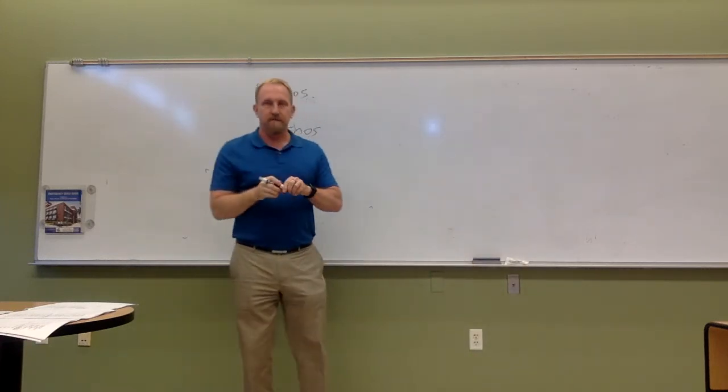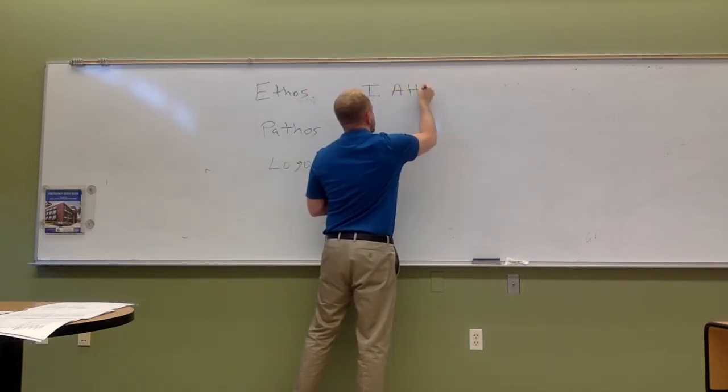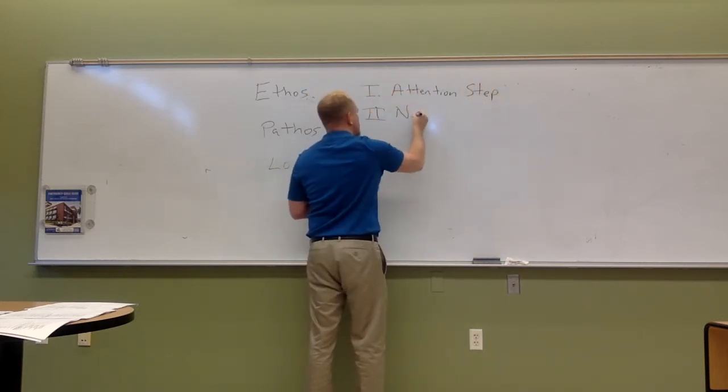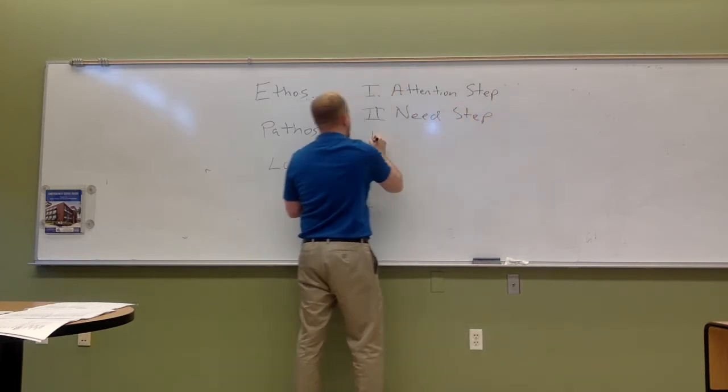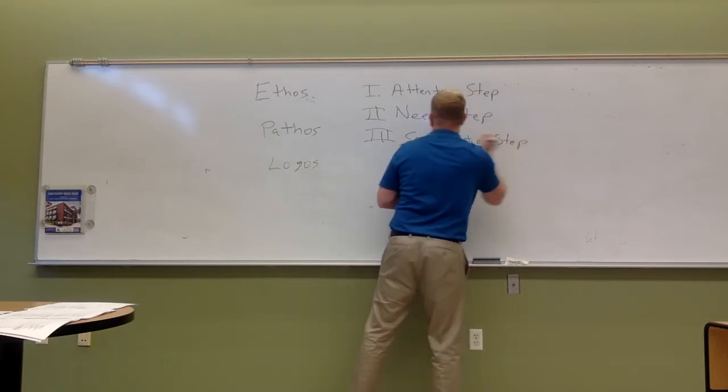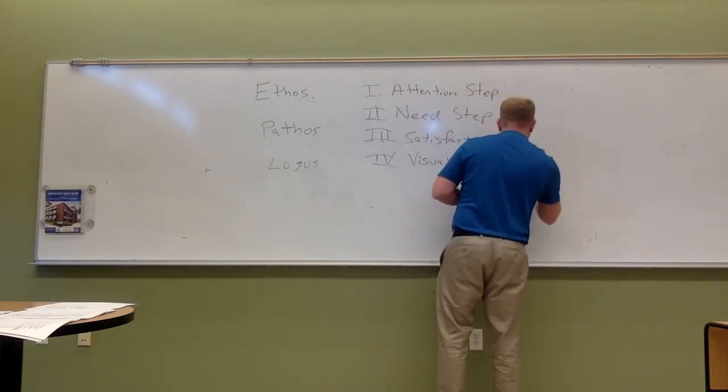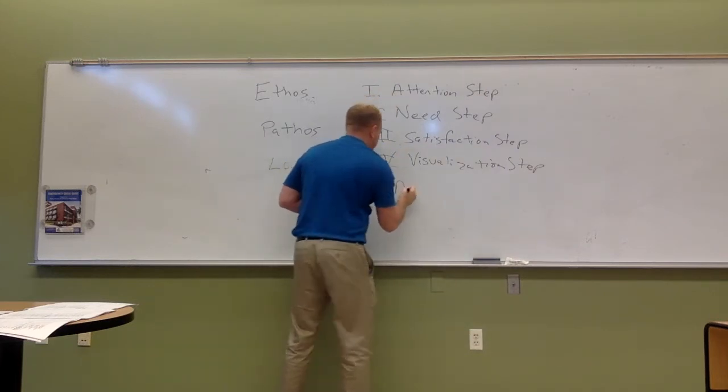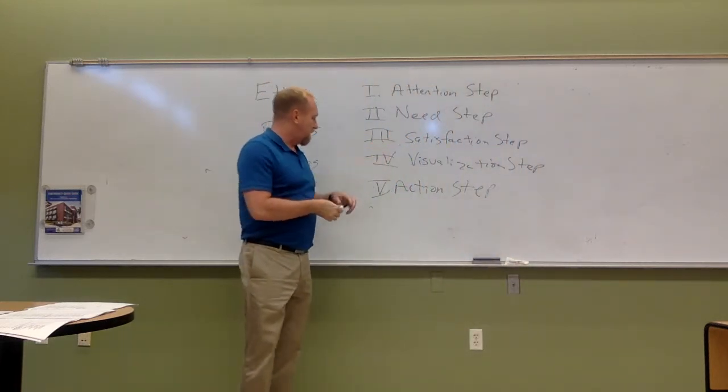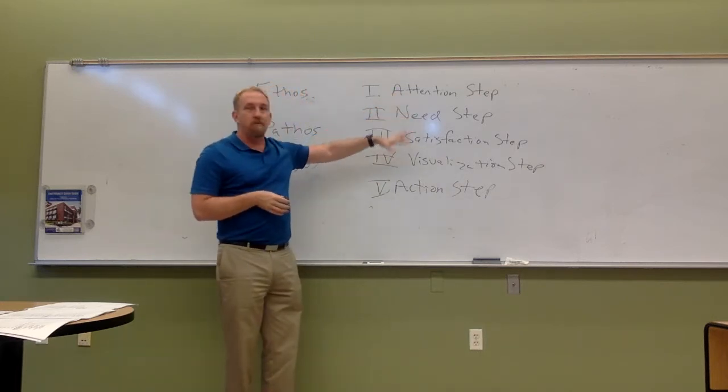Now that I've gone through that, tell me what the first step is. The attention step. What's the second step? The need step. What's the third? The satisfaction step. Then you've got the visualization step. And the last one. Action. Your outline has to be based on this pattern. Now, this is key. Make sure you put this in your notes. All of you put this in your notes. You can't jump around between these steps.